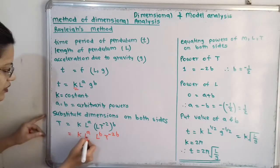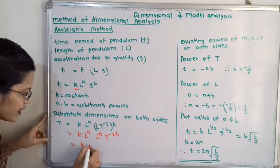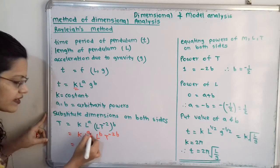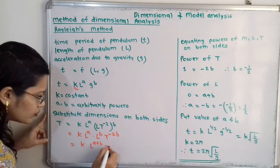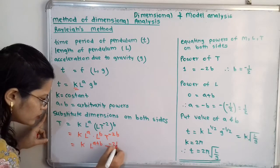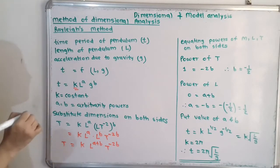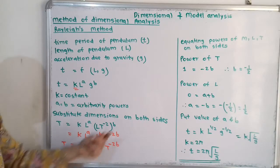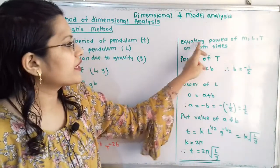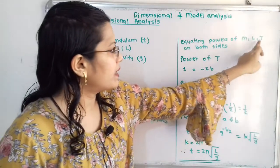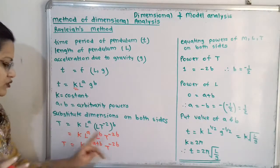Observing here, L and L are getting repeated. So we combine them: T = K into L raise to (A plus B) into T raise to minus 2B. Now we have to equate the powers of the fundamental dimensions — that is mass, length, and time — on both sides.